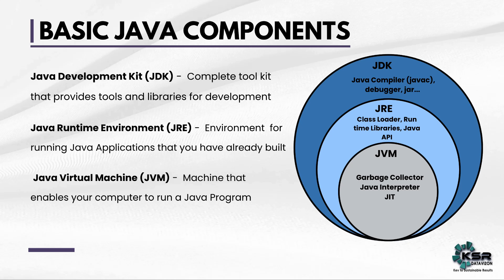Now let us see some basic components of Java. Java has three major components: JDK, JRE, and JVM. Think of JDK as a complete toolkit that provides tools to create and run a Java application. JRE is the Java Runtime Environment — once you create your Java application, you can use JRE to run it. JVM is the Java Virtual Machine, which enables us to interact with the computer and run your code. JDK contains JRE, JVM, and other tools like the Java compiler, debugger, and jar.